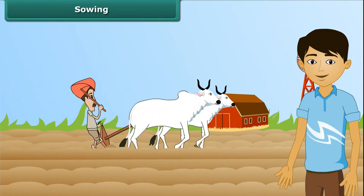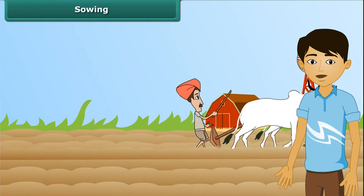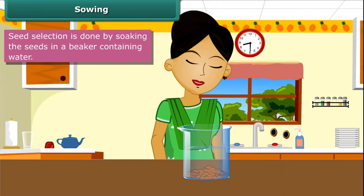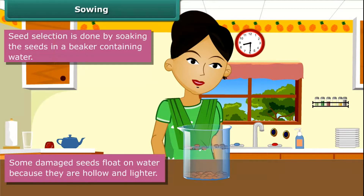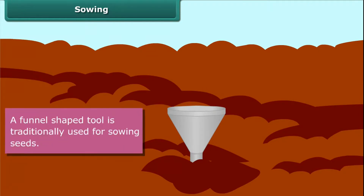Once plowing is done, the next step is sowing. Before sowing, farmers select good quality seeds to get high yields. Have you ever noticed putting some grains in water? Some seeds start to float because damaged seeds are hollow and hence lighter. This is a good method for separating good, healthy seeds from the damaged ones. Look at this farmer — he has a funnel-shaped tool for sowing seeds. He fills seeds into the funnel and passes them down through the sharp ends of the pipe to get them seeded in the soil. This is a traditional method and very easy.